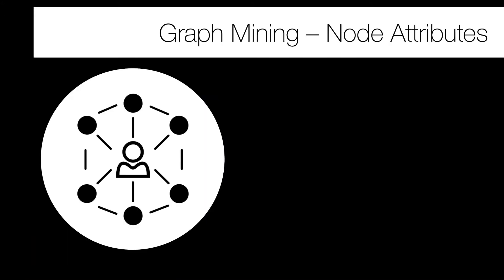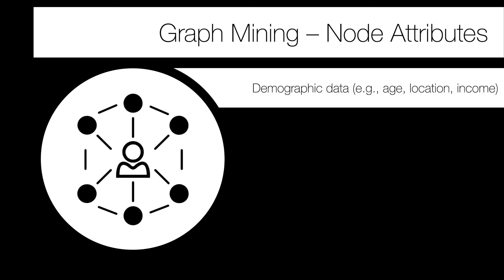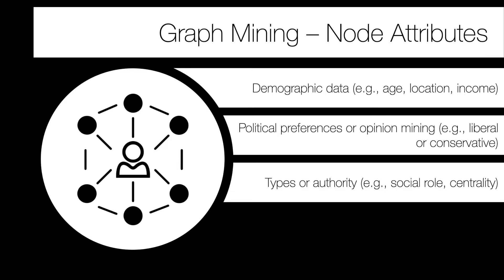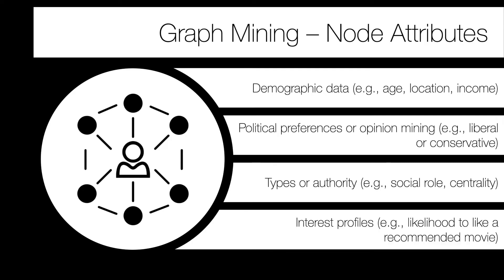For mining node attributes, you might infer demographic data like age, location, income, or education. You could use the network to infer political preference — Democrat or Republican — based on neighbors or graph structure. You might identify social roles and how important nodes are, which we've seen through centrality metrics. Or you might look at interest profiles to understand what topics or products a user is interested in, enabling recommendations.